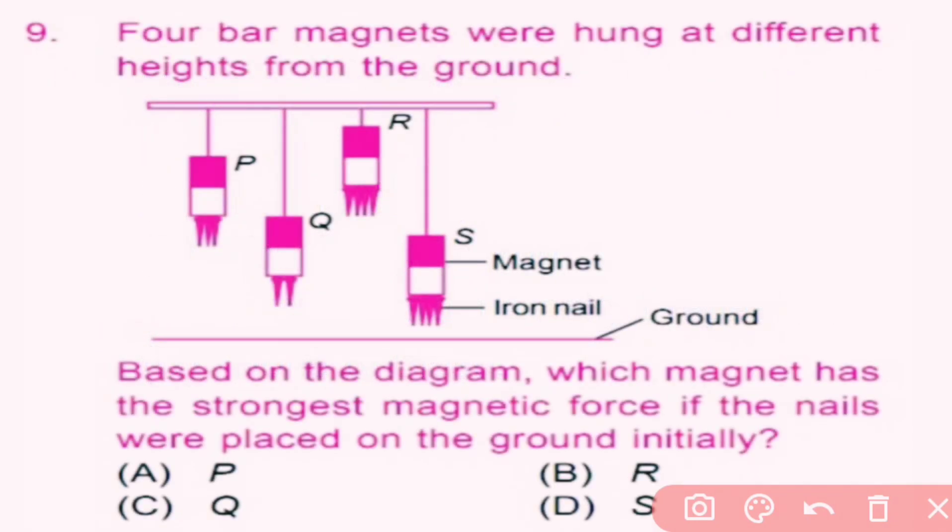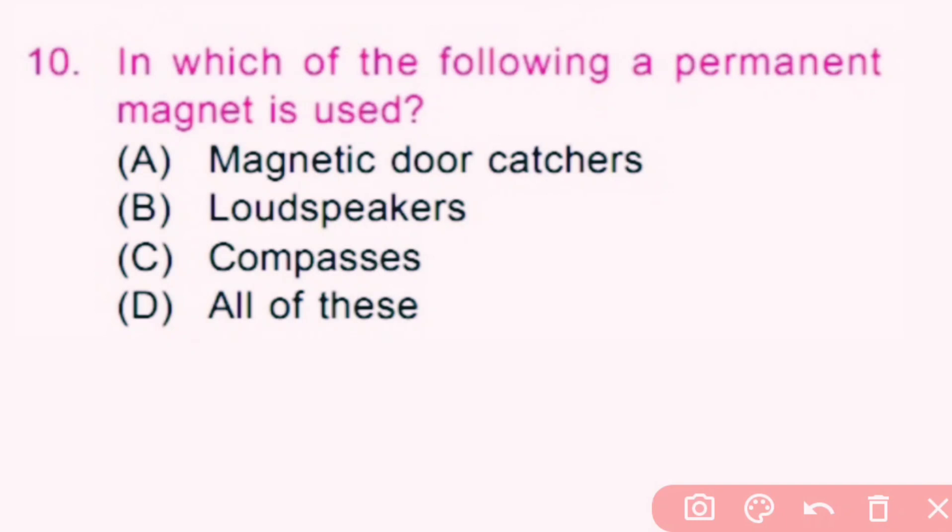Question number 9. Four bar magnets were hung at different heights from the ground. Based on the diagram, which magnet has the strongest magnetic force if the nails were placed on the ground initially? Here, magnet R is at the farthest distance from the ground than the other magnets, but it will attract the same number of pins, so magnet R has the strongest magnetic force. So here, B is the correct answer.